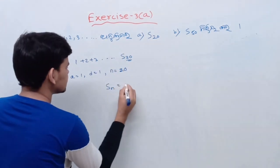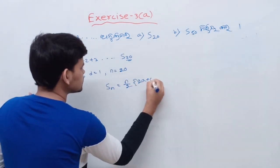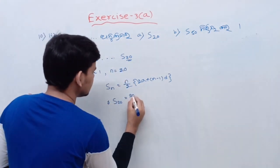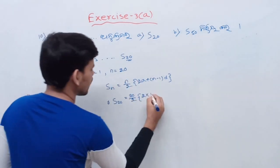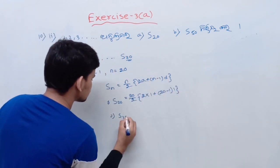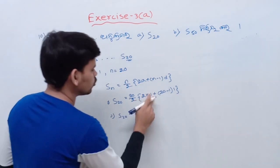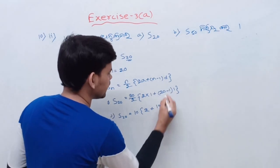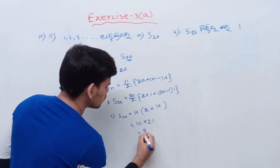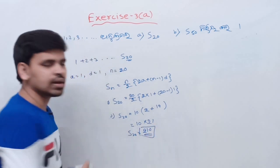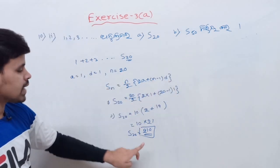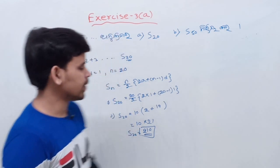So I am going to do that: Sn equals N by 2 into 2A plus N minus 1 into D. Sn is 20, N is 20, so 20 by 2, 2 into A is 1, plus N is 20 minus 1, and D is 1. So S20 is equal to 10, 2 into 1 is 2, so 20 minus 1 is 19, so 10 into 21 is 210. So S20 is equal to 210.